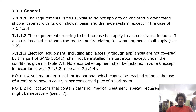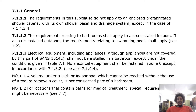Electrical equipment, including appliances — although appliances are not covered by this part of SANS 10142 — shall not be installed in a bathroom except under the conditions given in Table 7.1. No electrical equipment shall be installed in zone 0 except in accordance with 7.1.3.2. Note 1: a volume under a bath or indoor spa which cannot be reached without the use of a tool to remove a cover is not considered part of a bathroom. Note 2: for locations that contain baths for medical treatment, special requirements might be necessary.